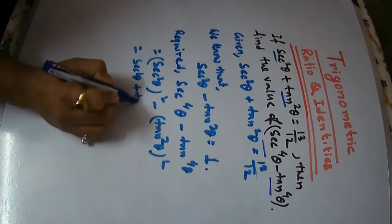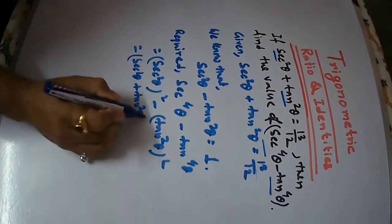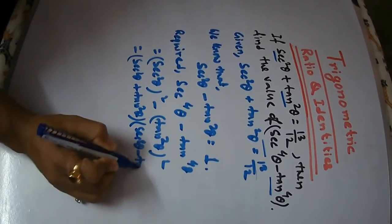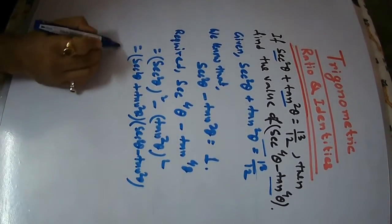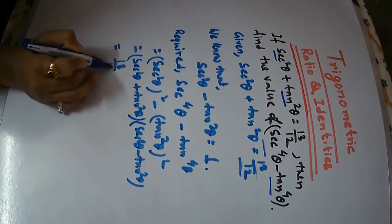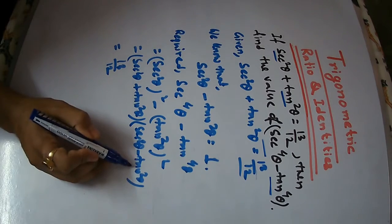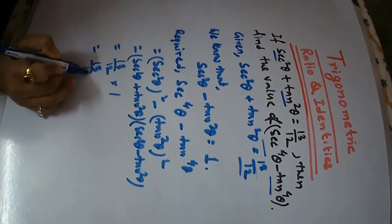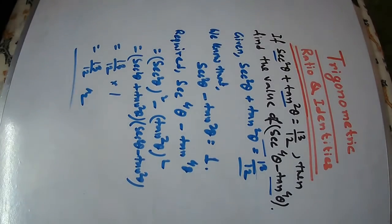Factoring: 6 square theta plus 10 square theta into 6 square theta minus 10 square theta. The first part is 13 by 12. 6 square theta minus 10 square theta comes out to 1. So the answer is 13 by 12.